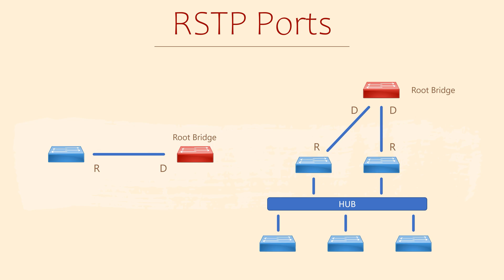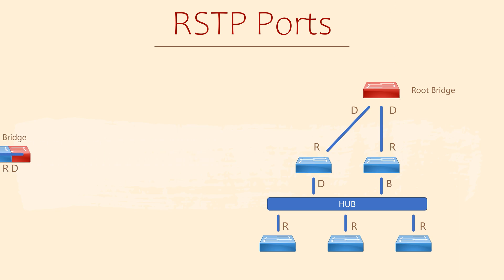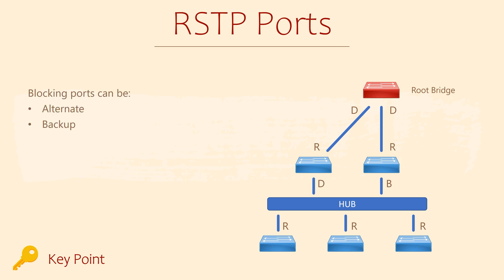If you do find a hub in your network, be aware that you can only have one designated port for the entire segment. If there was more than one, we would definitely have a loop. Therefore, one of these ports would need to be blocking instead. The blocking port is where things get interesting. Blocking ports can now be categorised as either alternate ports or backup ports.